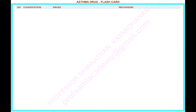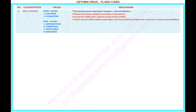Number 1 — name of the classification: Beta-2 agonist. Drugs under this classification: Short-acting Beta-2 agonists: 1) albuterol, 2) levalbuterol. Long-acting Beta-2 agonists: 1) arformoterol, 2) formoterol, 3) indacaterol, 4) salmeterol.